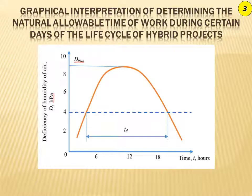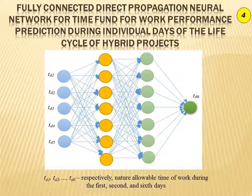The database for training artificial neural networks is the statistical data of meteorological stations. In particular, to predict funds for work performance during the life cycle of hybrid crop projects, humidity deficit data are used, which are recorded every three hours in the period from 1st July to 15th August. Only those humidity deficit data that exceed values of more than 4 are taken into account. This is due to the fact that the implementation of works in harvesting crop projects is possible only in such natural and climatic conditions. Failure to comply with this condition leads to a significant increase in moisture of the grain, as well as to loss of the crop.